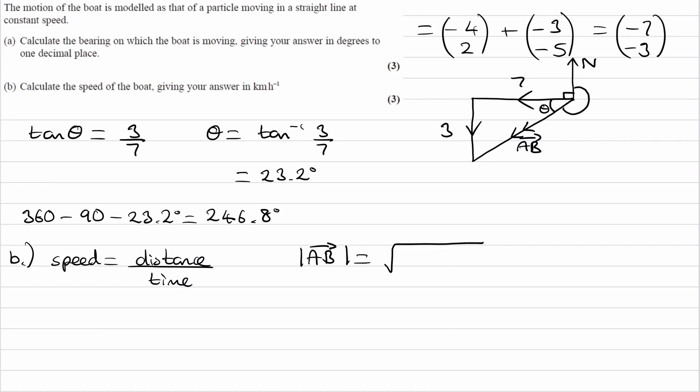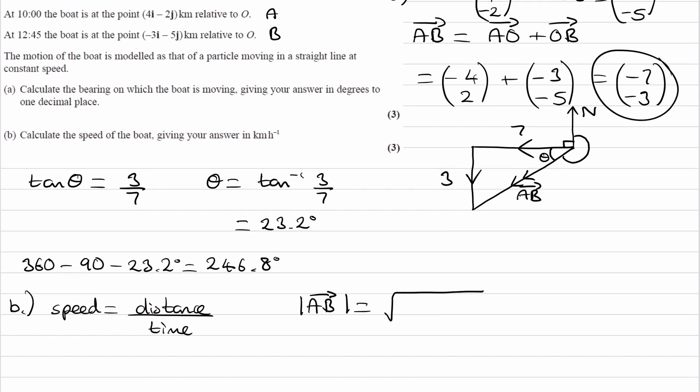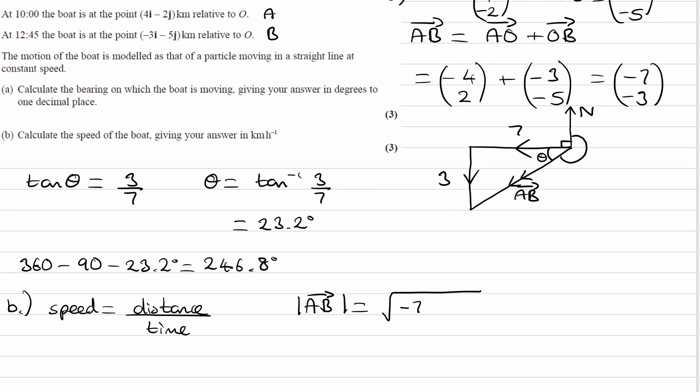That will be the square root of AB, which is (-7, -3), so it would be (-7)² + (-3)². That gives us √58, and this is in kilometers. The unit needs to be in kilometers per hour, so we need to work out what the time is in hours.